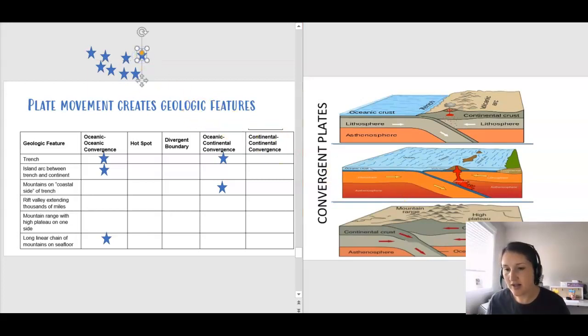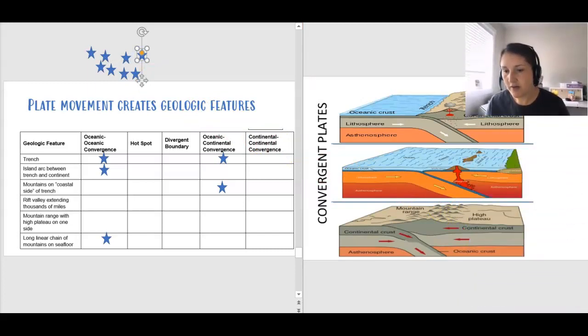Let's look at the last one, which is the continental continental convergence. We have a continental plate here on the left, and the continental plate here on the right. And when they converge, we don't have a trench this time because we don't have that kind of area of the ocean to fill in, but the land is going to have some formations there. But we do have a mountain range with a high plateau. Let's move this over mountain range with high plateau. We didn't get a trench. We didn't have an island arc. We don't have a coastal side because it's just two continents converging. And we don't have a seafloor.